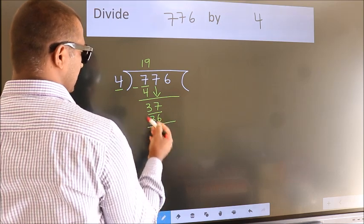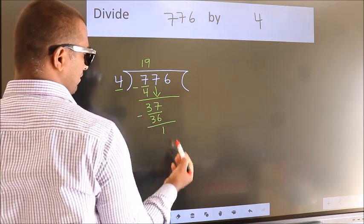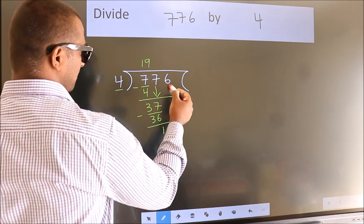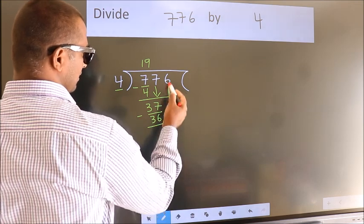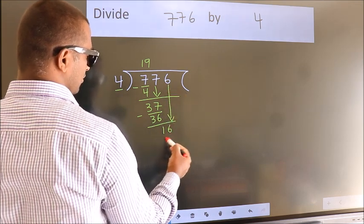Now we subtract. We get 1. After this, bring down the beside number. So 6 down, giving us 16.